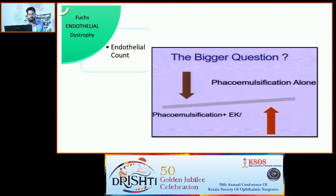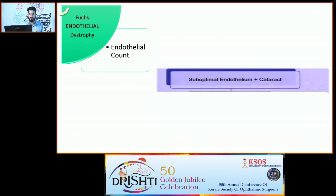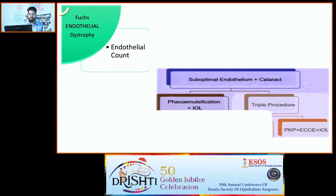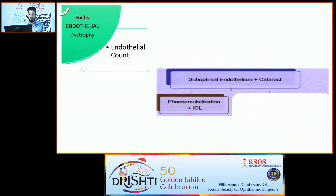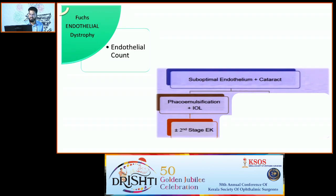Regarding Fuchs endothelial dystrophy, the question is whether to plan phacoemulsification alone or combine it with endothelial keratoplasty. If there is a compromised endothelium with cataract, phacoemulsification can be considered first, followed by a planned second-stage endothelial keratoplasty.